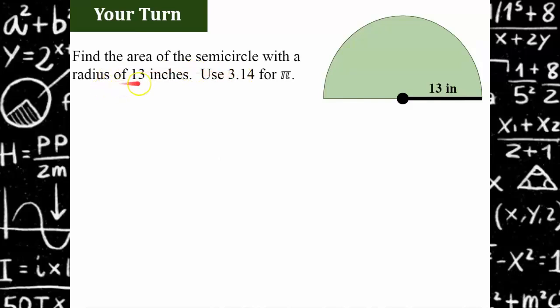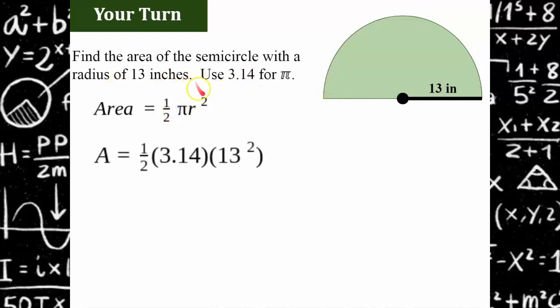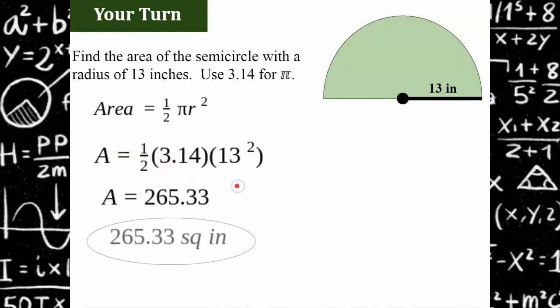Find the area of a semicircle that has a radius of 13 inches. Go ahead and pause, complete your work, and come back to check your answer. Welcome back. I have the one half here, remembering that the one half is only used when you have half of a circle. The area of a whole circle is pi r squared, but we have half, so we find half the area. The radius is 13, pi is 3.14. Using order of operations: 13 times 13 times 3.14, divide by 2. That gives 265.33 square inches.